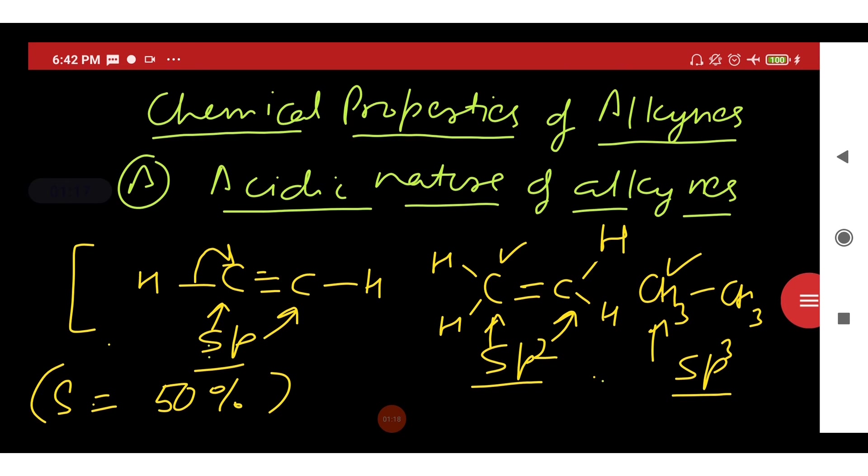Thus in ethyne, H plus ions can be easily released as compared to ethene and ethane. Hence the hydrogen atoms attached to the triply bonded carbon atoms are acidic in nature.